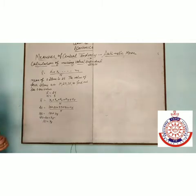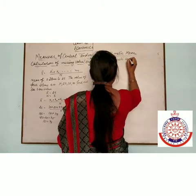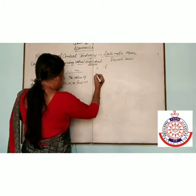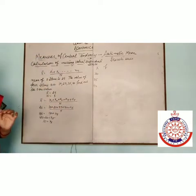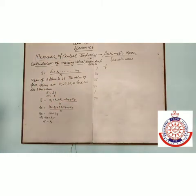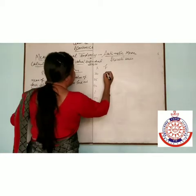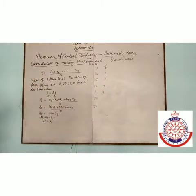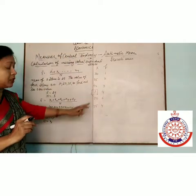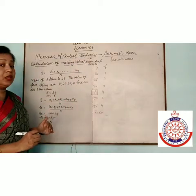In the case of discrete series, x and f values are given. The values of x are 30, 35, 40, 50, and 75. The frequencies are 1, 2, 3, 4, and 6. Here, one frequency value (f) is missing, and x̄ is given as 50. We need to find out this missing value.